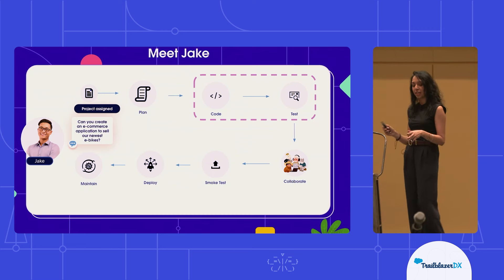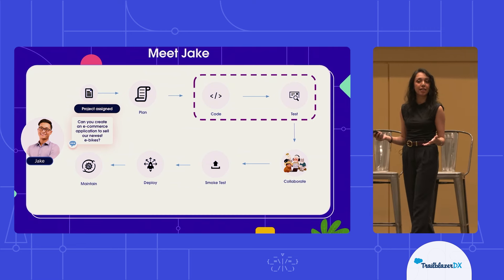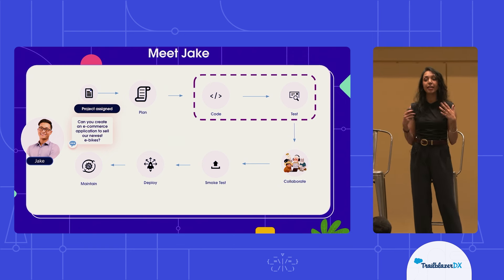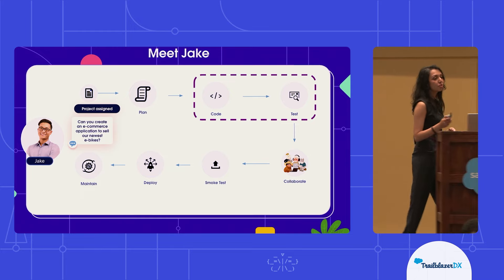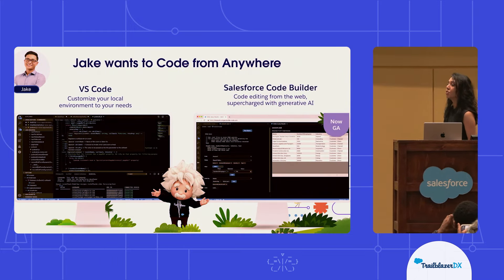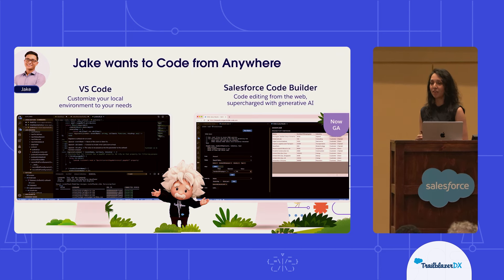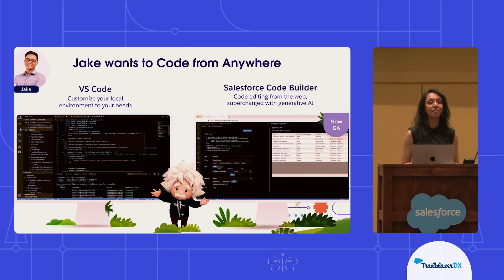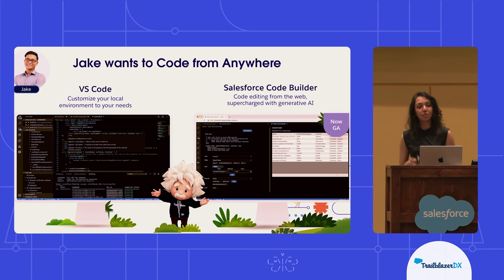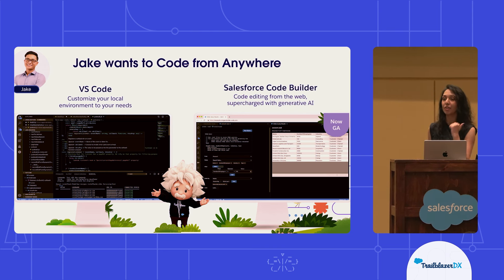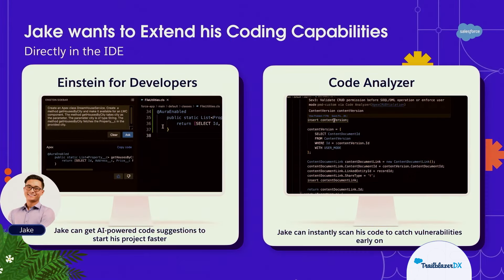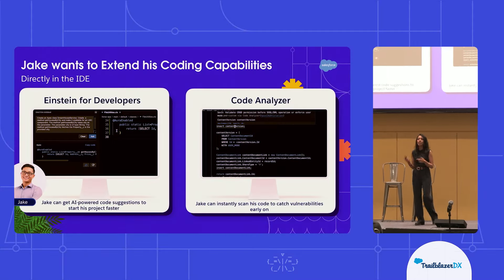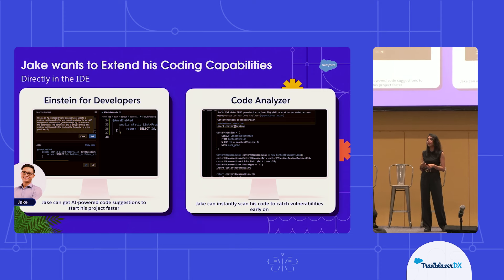So let's take a look at what Jake is working on today. We're going to start off in the coding and testing phase for Jake. He is going to be working inside of our eBikes project, and he wants to get started with his initial task of the day. He has been told that he needs to add in some new functionality to our product controller within eBikes. Everything we'll be talking about today is going to be available to you in both VS Code and Code Builder, which means that you can utilize this on your desktop and inside of your browser. We want to see how Jake is able to leverage Einstein for Developers and Code Analyzer to complete his tasks within the coding and testing portions of his development lifecycle.